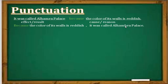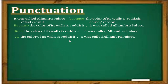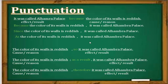However, if I start the sentence with 'because': 'Because the color of its walls is reddish, it was called Alhambra Palace' — I must put a comma after the first clause. Without the comma it would be illogical, since there is nothing else separating the two clauses. The same rule applies with 'since' and 'as': 'Since the color of its walls is reddish, it was called Alhambra Palace' — a comma is required.